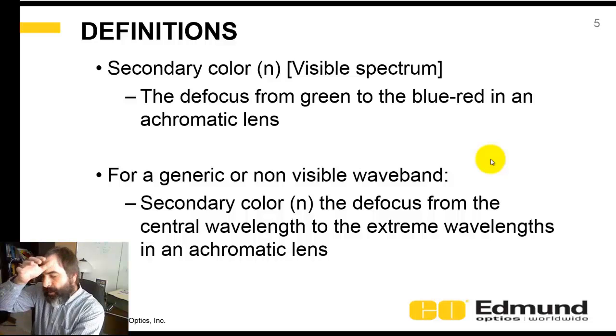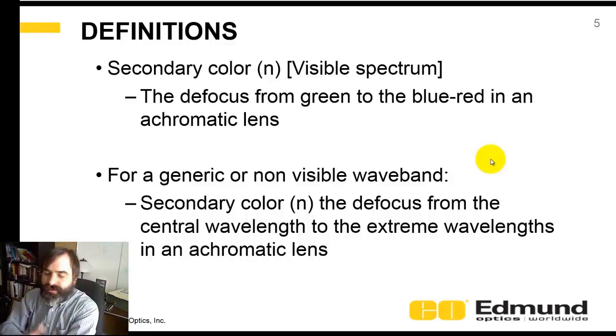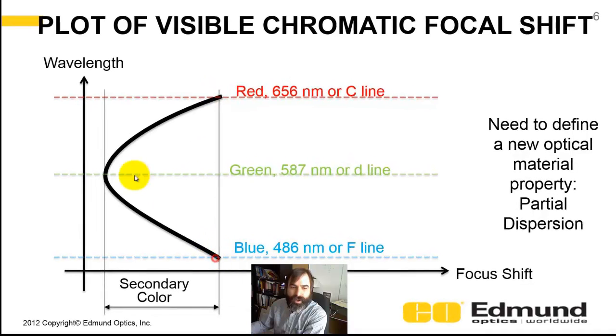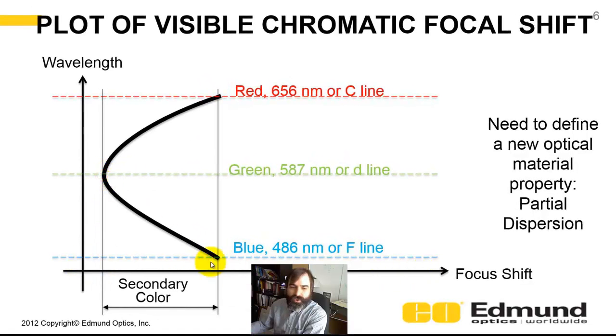This is greatly dramatized here, just for clarity. A couple definitions: secondary color, depending on whether it's visible, it's the defocus from the blue, red, to the green. Or in a generic case, generic waveband case, it's the central wavelength defocus to the two wavelength extremes. And graphically, in a graph this can be shown here, in the vertical is wavelength, red at the top, blue at the bottom, green in the middle. And the horizontal is this focus shift, and you can see that red and blue fall on top of each other, and this difference is, again, secondary color.